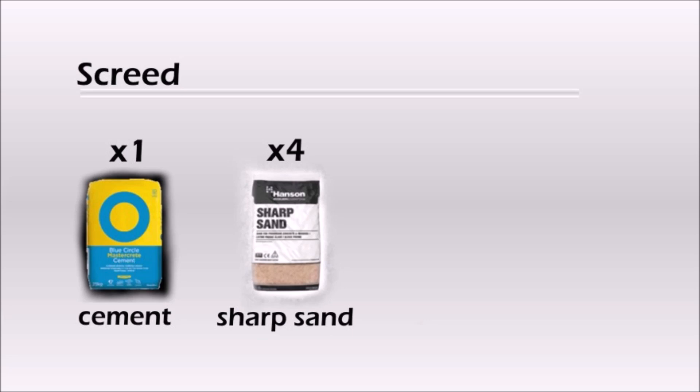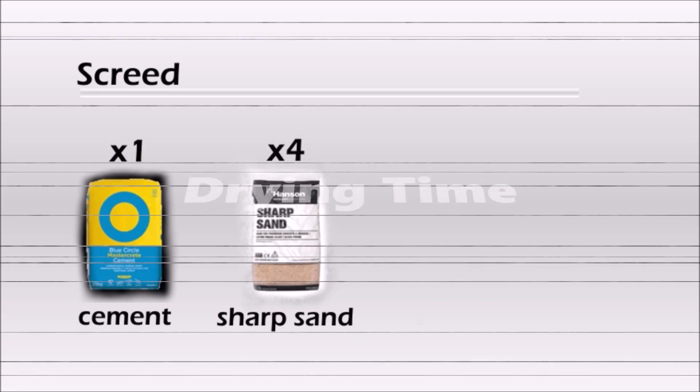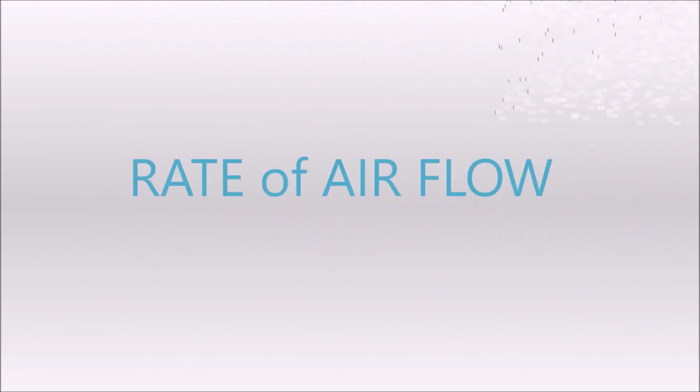The ratio mix for screed is pretty simple, as you mix only cement and sharp sand. You need one part cement and four parts sharp sand. There is a certain drying or curing time. Obviously it depends on factors like humidity, temperature, rate of airflow, or water to cement ratio.